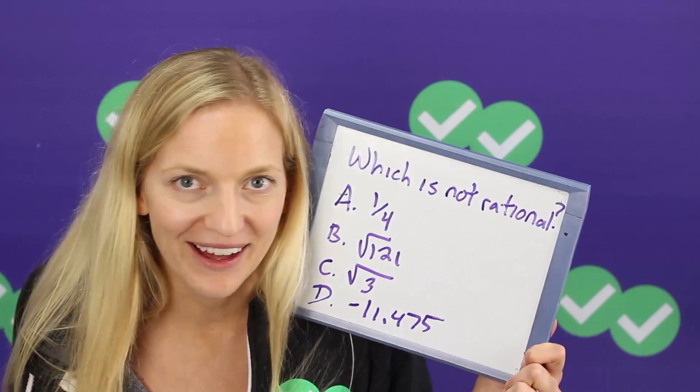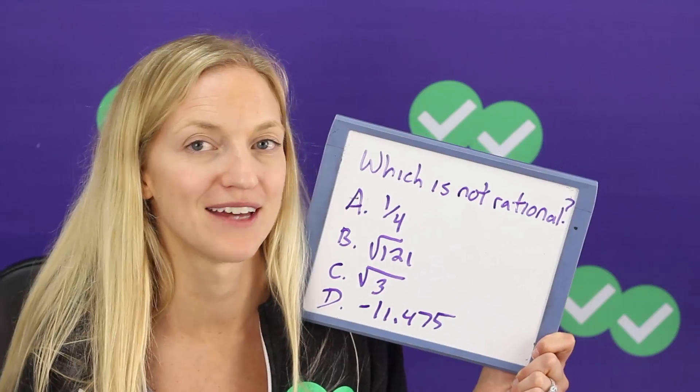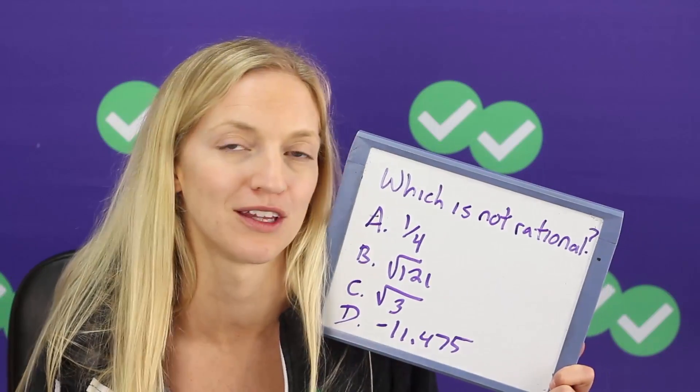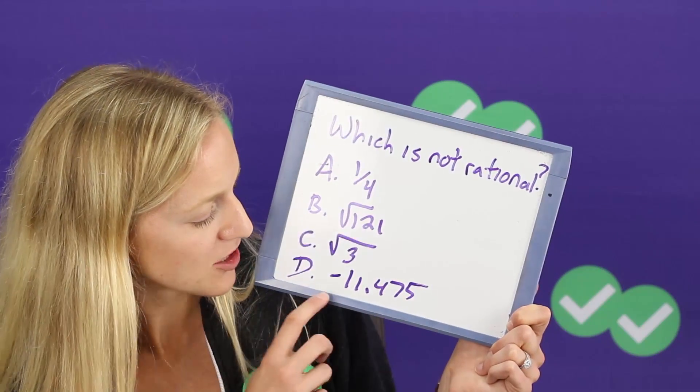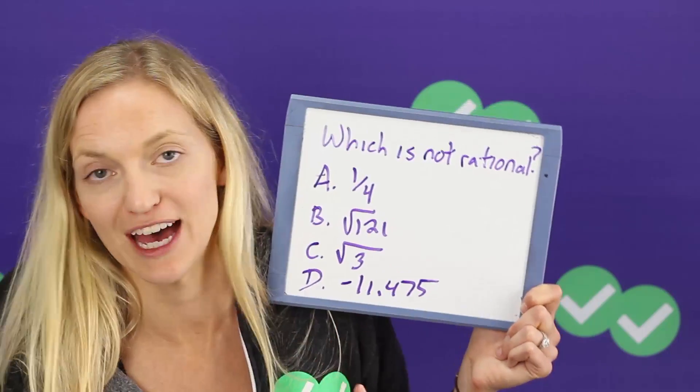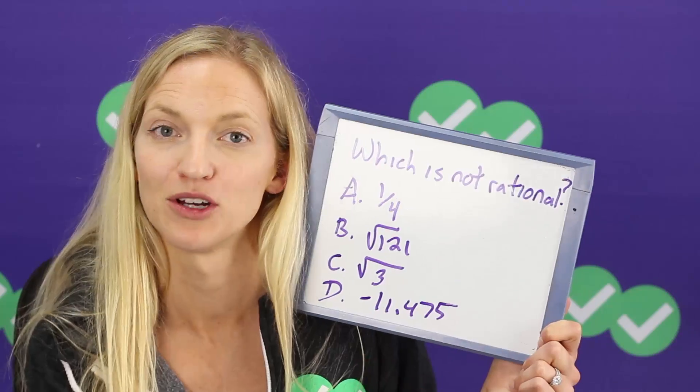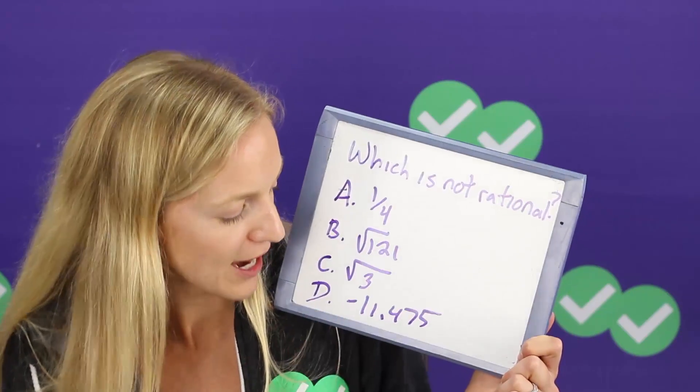Square root of 3 however, that is irrational because it just has a whole bunch of numbers. If you plug in your calculator there's no pattern, there's no repetition to it. So that is our answer, irrational. But negative 11.475, that's an example of a terminating decimal. So we could express it as a fraction.